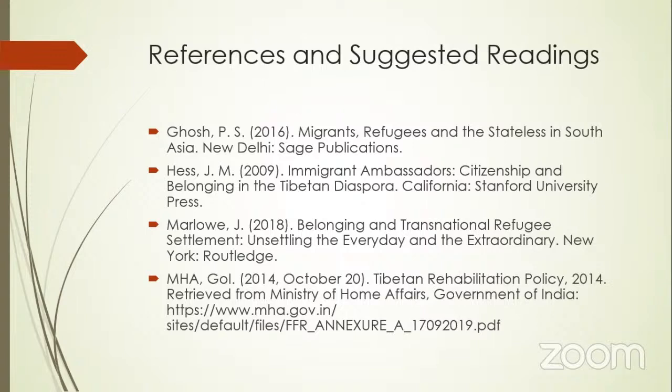Some references: P.S. Ghosh, Migrants, Refugees and Stateless in South Asia. J.M. H.E.S., Immigrant Ambassadors, Belonging and Transnational Refugees, Tibetan Rehabilitation Policy. There is a Tibetan diaspora framework geographical compass, context of diaspora citizens, Somali communities in Finland and the United States, citizenship and identity, uncanniness of late modernity, and unintended consequences of Indian policy on citizens for Tibetan refugees.